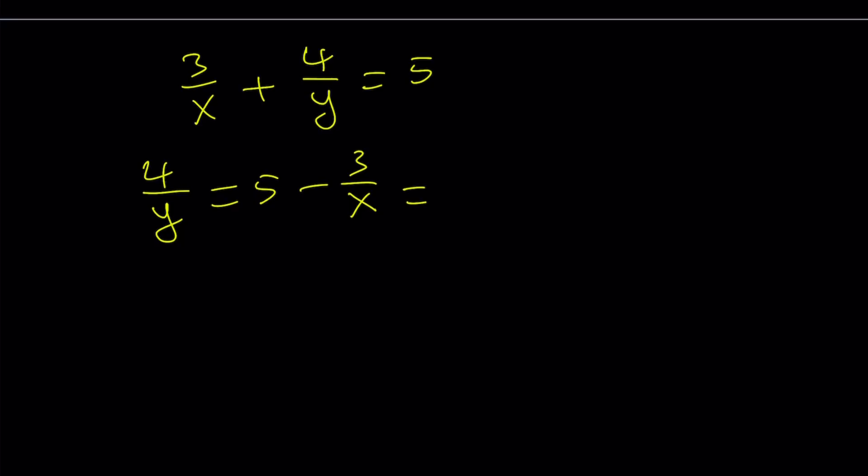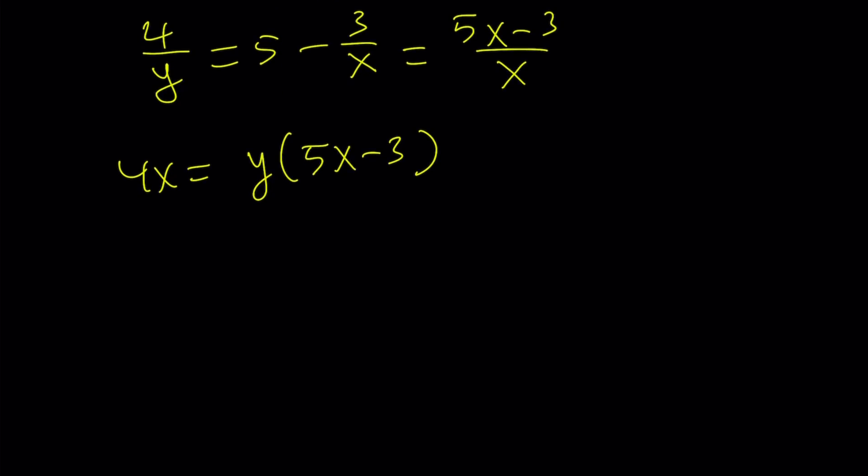Let's make a common denominator. And crisscross applesauce. Cross multiply. 4x equals y times the quantity. Do not distribute. Because I would like to solve for y. Let's go ahead and divide both sides by whatever is needed. So, y is going to be 4x over 5x minus 3.